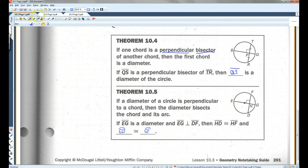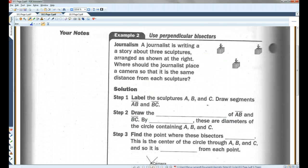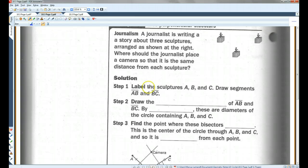Okay, let's go on to page two. Example two. A journalist is writing a story about three sculptures arranged as shown at the right. Where should the journalist place a camera so that it is the same distance from each sculpture? Label the sculptures A, B, and C. Draw segments AB and BC.